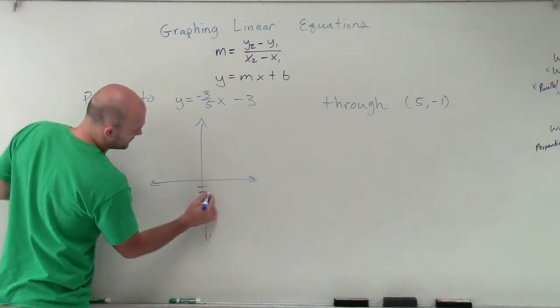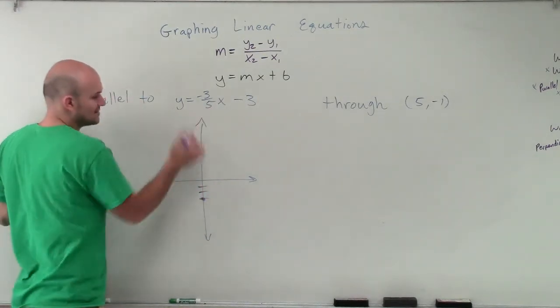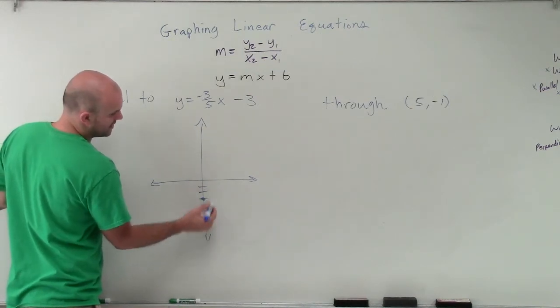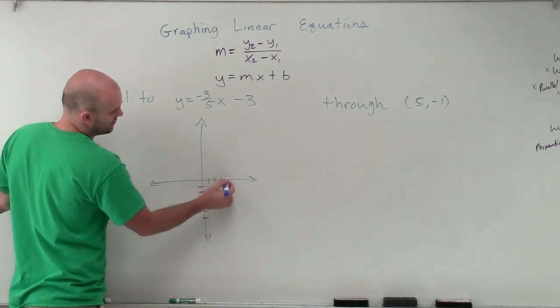So here I have a y-intercept at negative 3. And then my slope is going to be going down 3 over 5. So 1, 2, 3, and then over 5 units. 1, 2, 3, 4, 5.